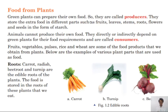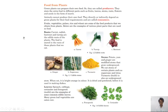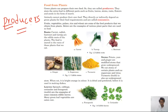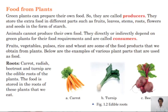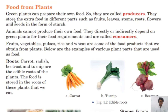Since green plants can prepare their own food, they are called producers. They store the extra food in different parts — such as fruits, leaves, stems, roots, flowers, and seeds — in the form of starch.